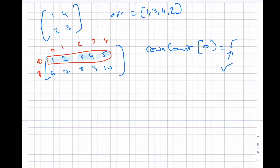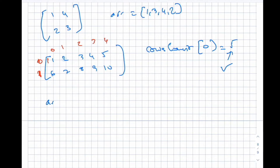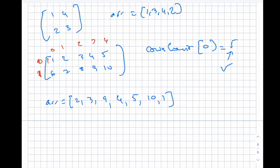With something like this, let's say our array is two, three, nine, four, five, ten, one, and then the remaining values seven, six afterwards. We'll start processing each element.